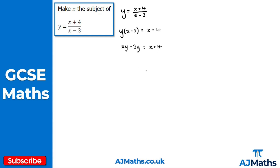We now have a problem similar to question one — collect all x terms on one side and everything else on the other. I have xy on the left and x on the right, so I subtract x from both sides, giving xy - x - 3y on the left hand side equal to 4. Now I need to get rid of the minus 3y, so I add 3y to both sides.